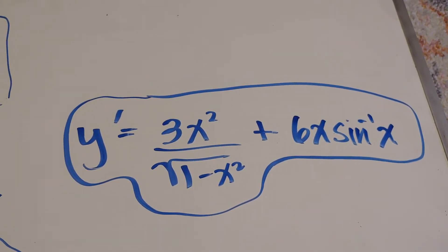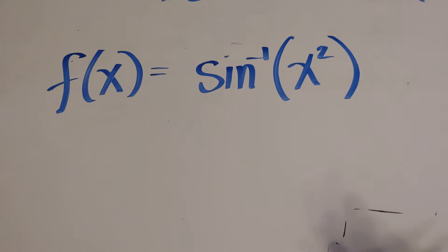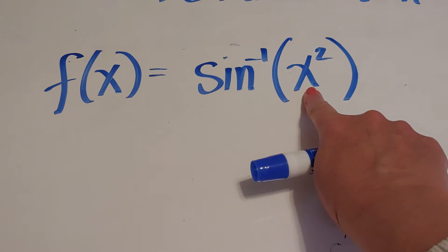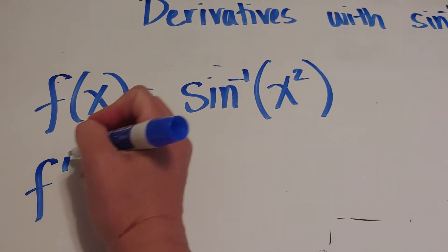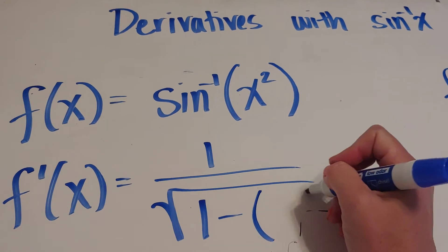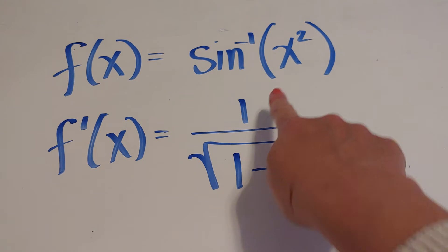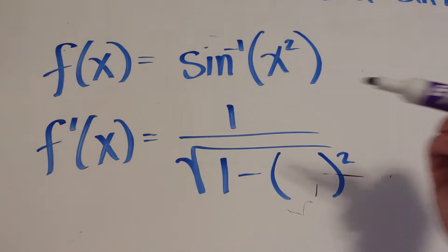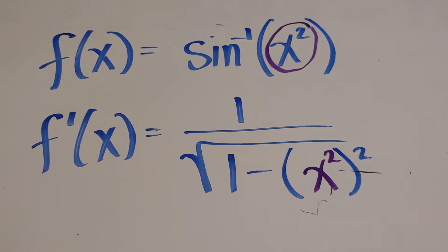I'm now going to practice a couple with chain rule. Here's an example of chain rule. How I know it's chain rule is that it's sine inverse parentheses x squared. So, this is now inside the sine inverse. The derivative of sine inverse is 1 over square root of 1 minus x squared. Right? So, I write 1 over square root of 1 minus, and then I put my x squared. That's my inside. I'm going to take this inside, which is x squared, and I'm going to put it right here.